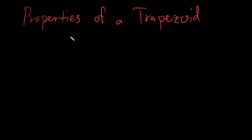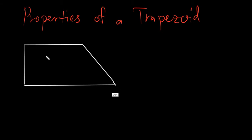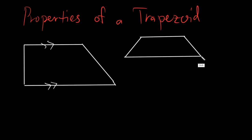Before we go into our lesson, let me just show to you what a trapezoid is. Based on definition, a trapezoid is a quadrilateral with one pair of parallel sides. So your figure could either be like this — as long as you will have your parallel side, you are good. Even if your figure would be like a plateau, as long as you have one pair of parallel sides, then therefore this is a trapezoid.